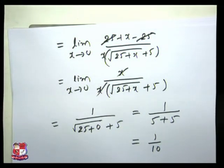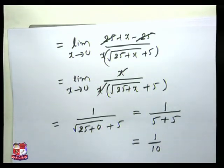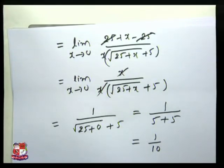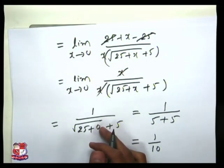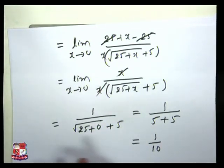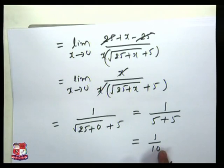The answer is 1/10. By using the rationalizing factor, we solved this example very easily. The answer is 1/10. This is the first example of question 2B. Now let us solve the second example of 2B.